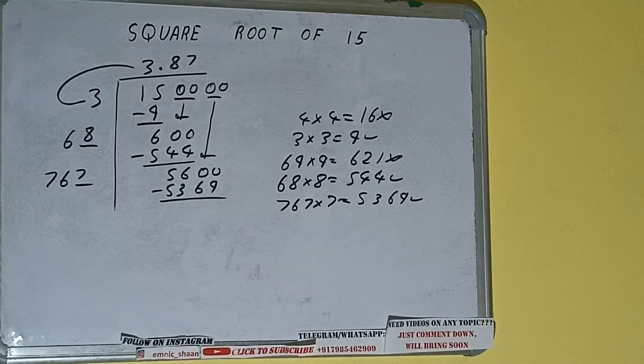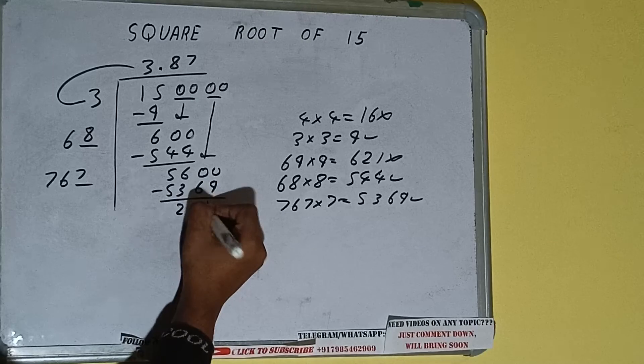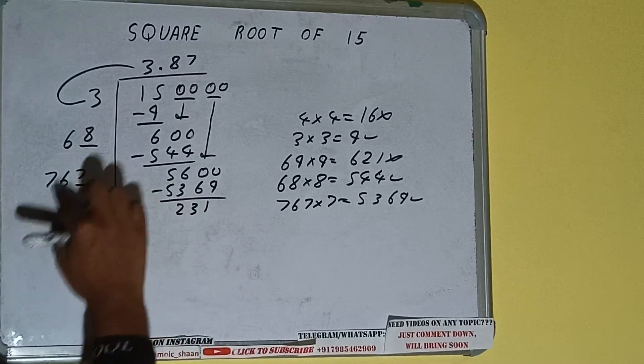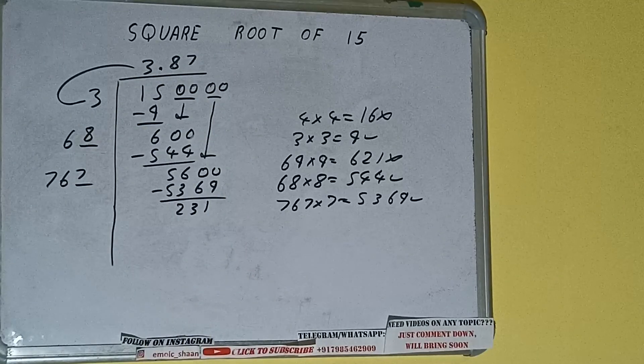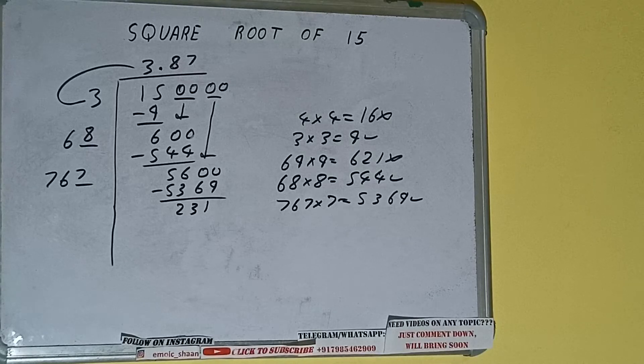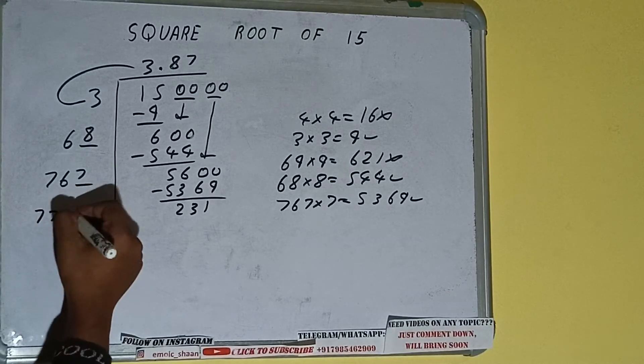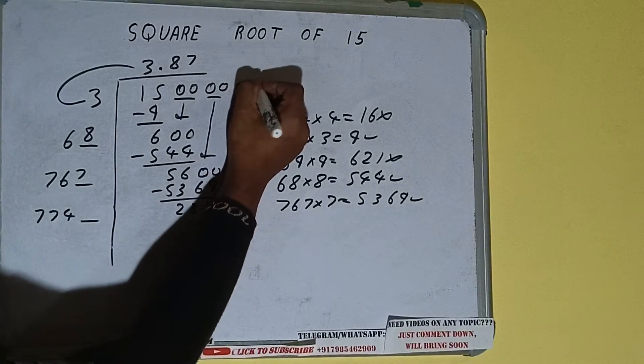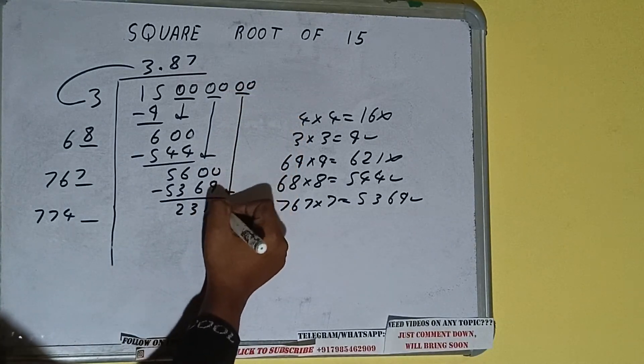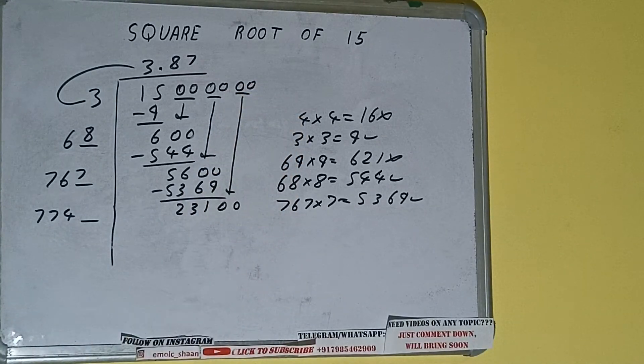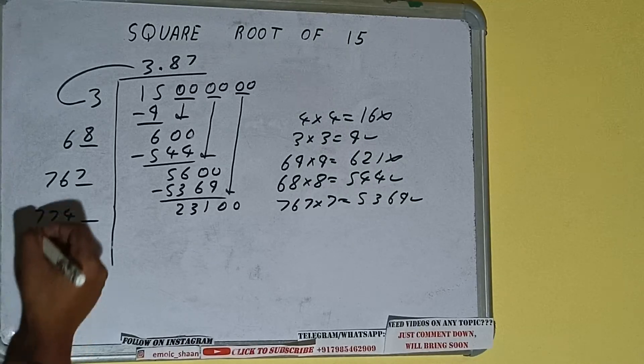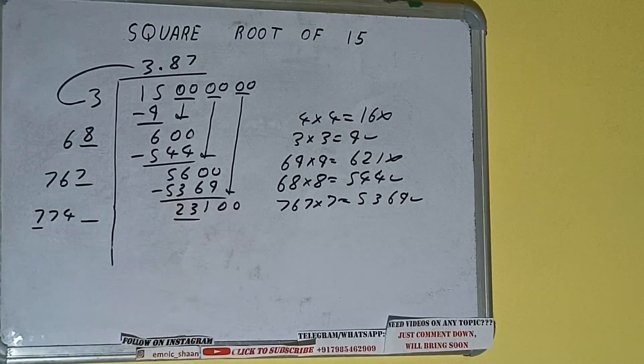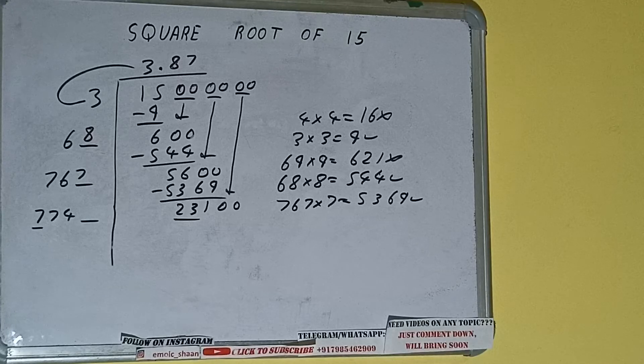And we'll be having 231. Now 767 into 7, so add both. So 767 plus 7 will be 774 and 1 digit extra. And this number we need to make it big, so bring the next pair of zeros down and it will be 23100.